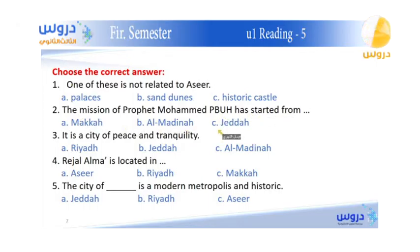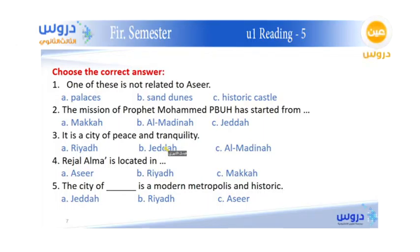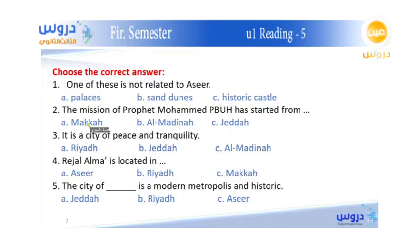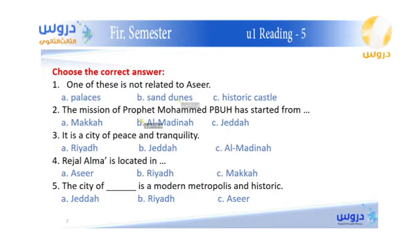Question one: which of these is not related to Asir — palaces, sand dunes, or historical castle? Question two: the mission of Prophet Muhammad, peace be upon him, started from — Mecca, Al-Medina, or Jeddah? Question three: it's a city of peace and tranquility — Riyadh, Jeddah, or Medina? Please say your answers. Roseanne said B for number one, and Shurok said A for number two.